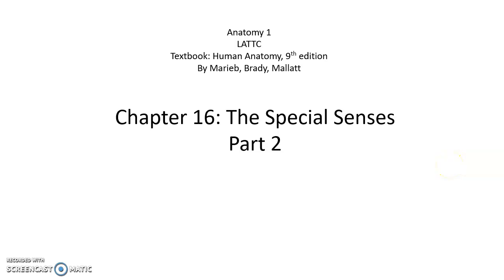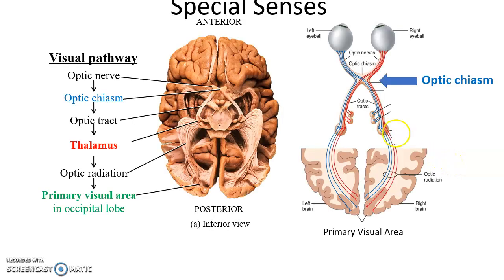The Special Senses, Part 2. Last little bit for vision. So the visual pathway — how the information gets to the primary visual area.